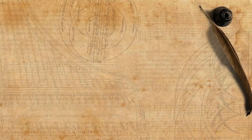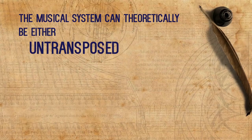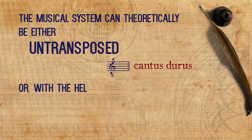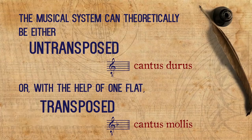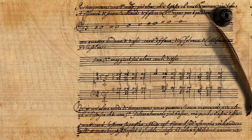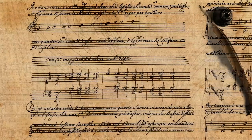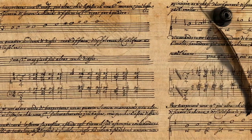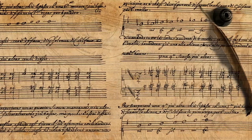This is an important concept: the musical system can theoretically be either untransposed, cantus durus, or, with the help of one flat, transposed, cantus mollis. Transpositions as we know them, with all the different accidentals, did take place in practice throughout the 16th century, but it was not until the middle of the 17th century that they began appearing in written-out compositions.